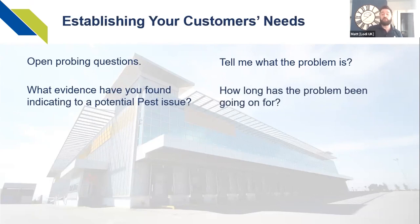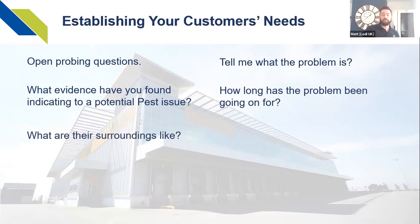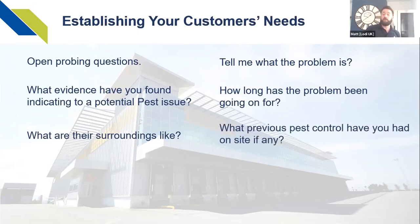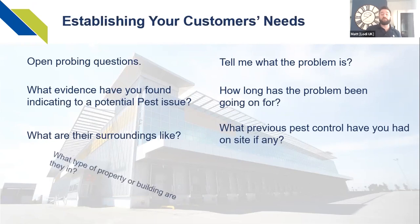How long has the problem been going on for? Is it a problem that's recently started up, or is it something that they've had to try and deal with previously and unfortunately been unsuccessful? What are their surroundings like? This is a key one because if they've got neighbours with rubbish in the garden, if you're a business surrounded by railway or embankments, if you've got canals or rivers nearby — all these things will help you establish the level of risk. What previous pest control have they had on site, if any? They might not have had a pest controller previously or might have tried to do it themselves.